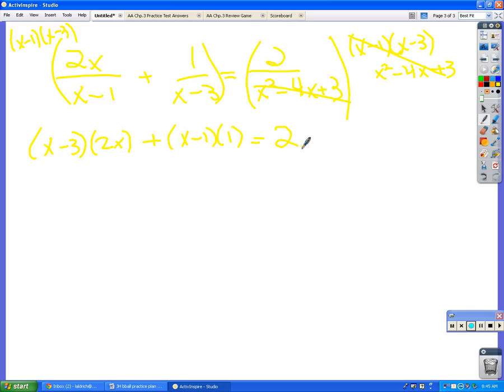All right. Now it's just easy math to solve this equation. So if I distribute the 2x, I get 2x squared minus 6x. And then I wrote this 1 here just so you wouldn't be confused. But obviously, distributing a 1 isn't going to change anything. So that's plus x minus 1, and then that equals 2.